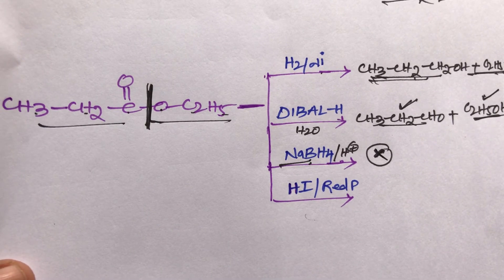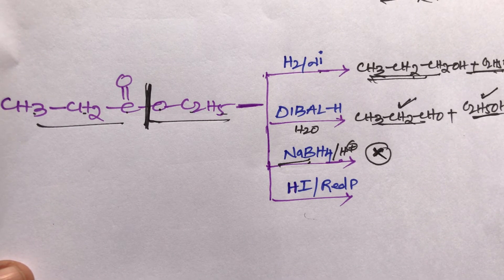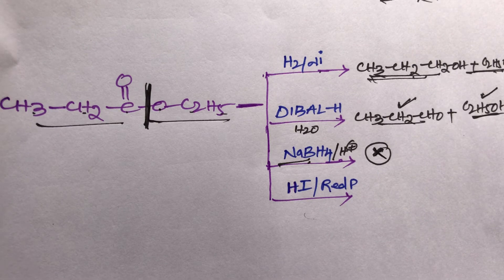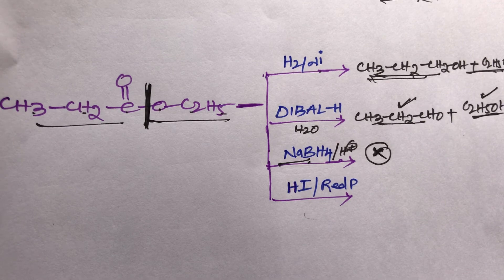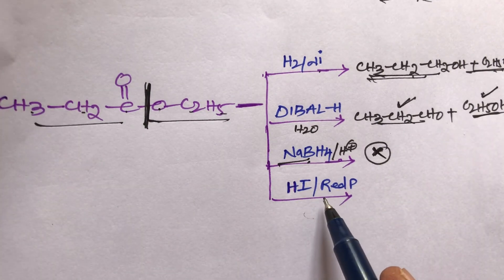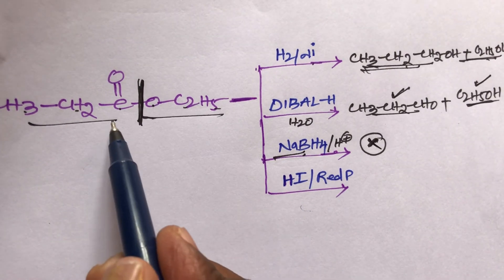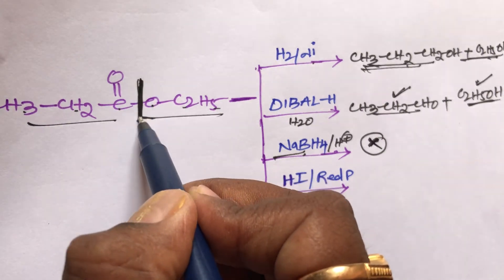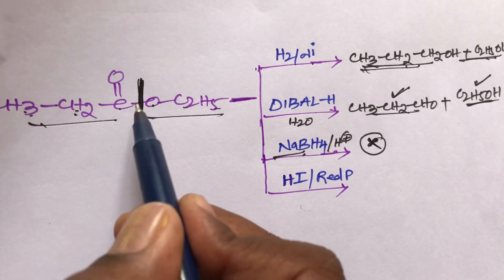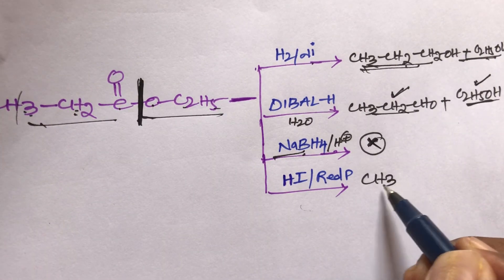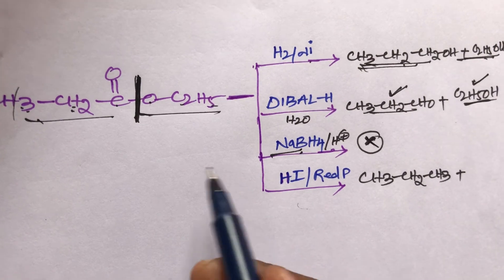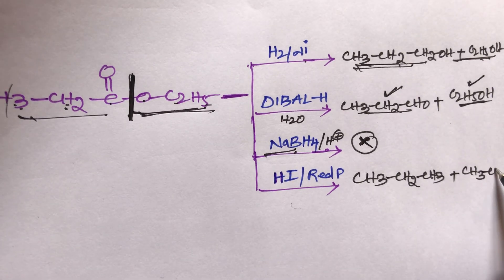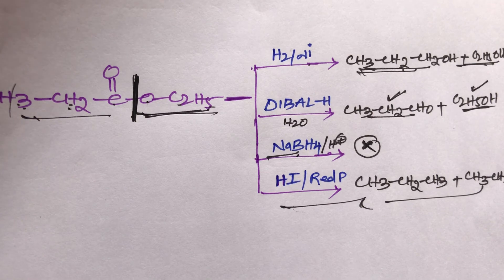HI in the presence of red phosphorus can reduce the ester group. Hydrogen iodide is a strong reducing agent already discussed in a previous video; it can reduce acid groups, ester groups, acid chlorides, aldehydes, ketones, and alcohols — all giving hydrocarbons. So HI/red phosphorus reduces the ester with bond cleavage: CH3-CH2-CO becomes CH3-CH2-CH3 (propane) and C2H5O becomes C2H6 (ethane).